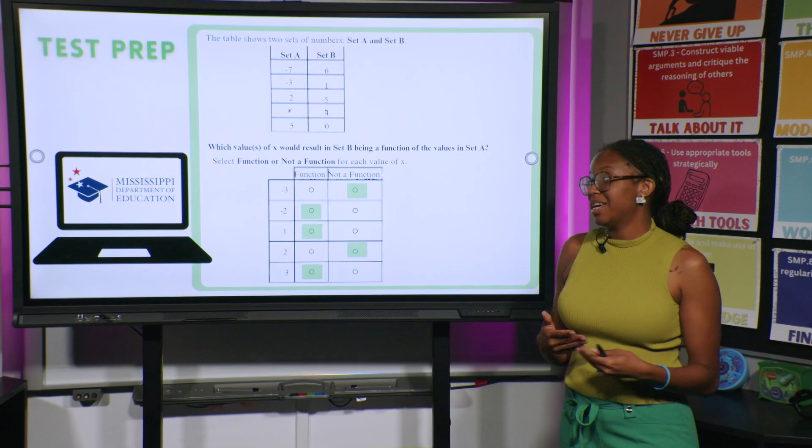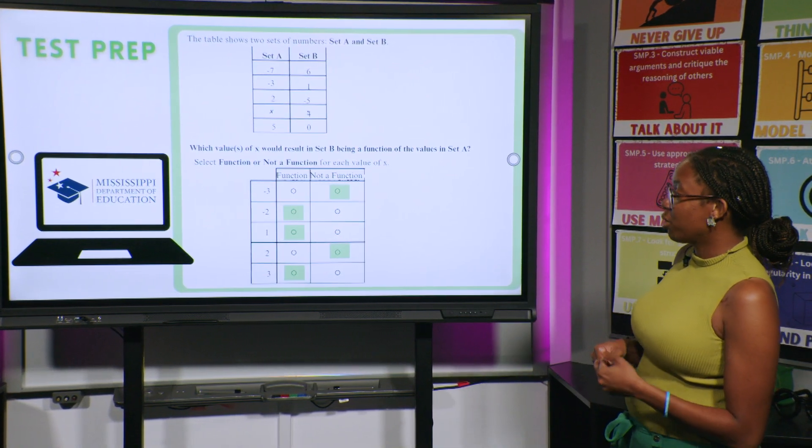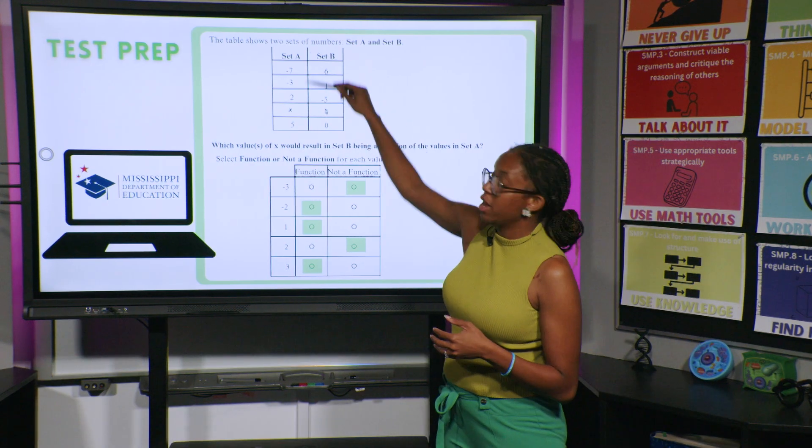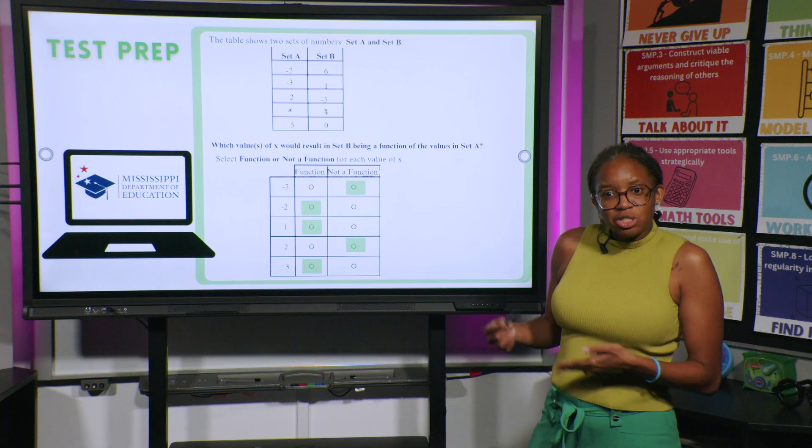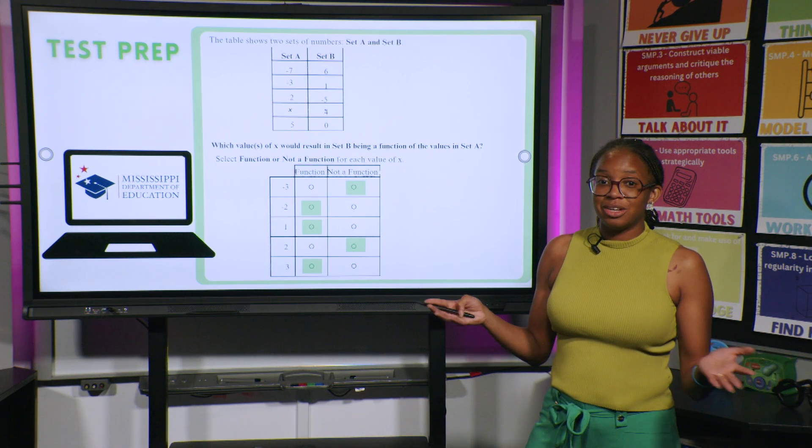Well, if you said that negative three would mean it's not a function, you're correct. Negative two, meaning it would still be a function. One, it would still be a function. And then also three, it would still be a function. You are correct. If we would have put negative three in for Set A where x is, it repeats. If we would have put in two in Set A where you see x, it also repeats in Set A. Meaning that, guess what? It's not a function.